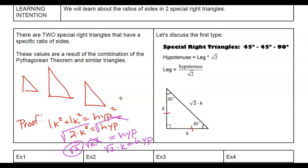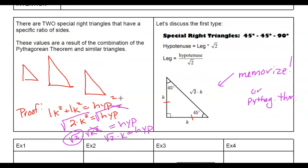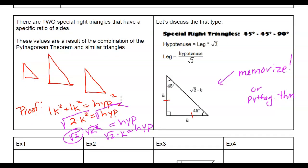So that's what we have right here. You can get this mathematically if you forget the memorized ratios, but it's quicker if you do memorize them. So I'm going to say memorize, or you have to do the Pythagorean Theorem every time. There are some shortcuts: if you want the hypotenuse, you take the leg value and multiply by root 2. If you're given the hypotenuse and want to find the leg, you divide by root 2.